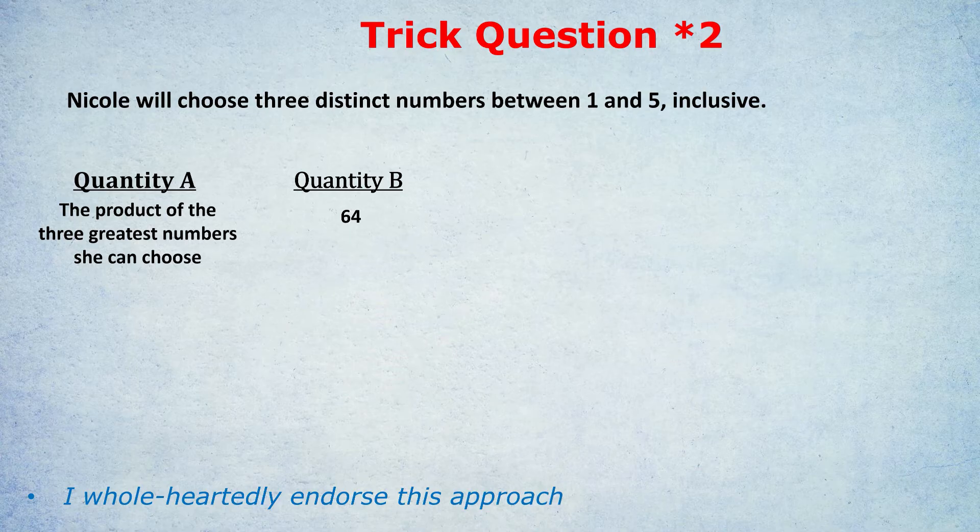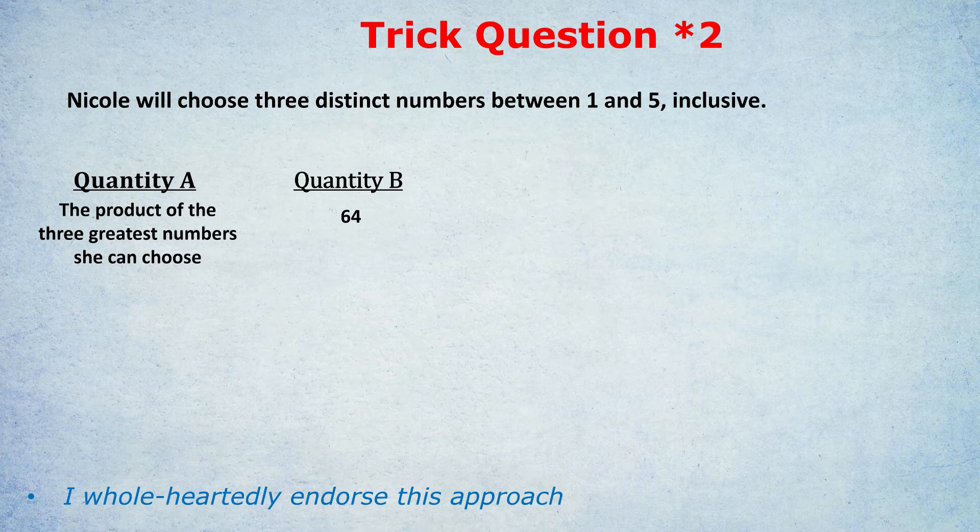So here in this question we can see that they have used the word distinct, which means that the numbers she's going to pick can't all be the same. Quantity A is the three greatest numbers she can choose, so that would be 3, 4, and 5. Inclusive means including 1 and 5, including the bottom end of the range and top end of the range. So most students would go 3 times 4 times 5 is 60, and that's smaller than Quantity B, which is 64. So Quantity B is the bigger one.